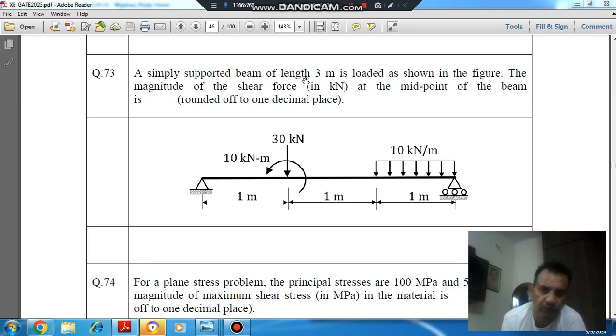A simply supported beam of length 3 meters is loaded as shown in the figure. The magnitude of shear force in kN at the midpoint of the beam is, rounded to 1 decimal place. This is the figure shown, and this is 10 kN per meter UDL. This is a moment 10 kN meter, and 30 kN per meter UDL.